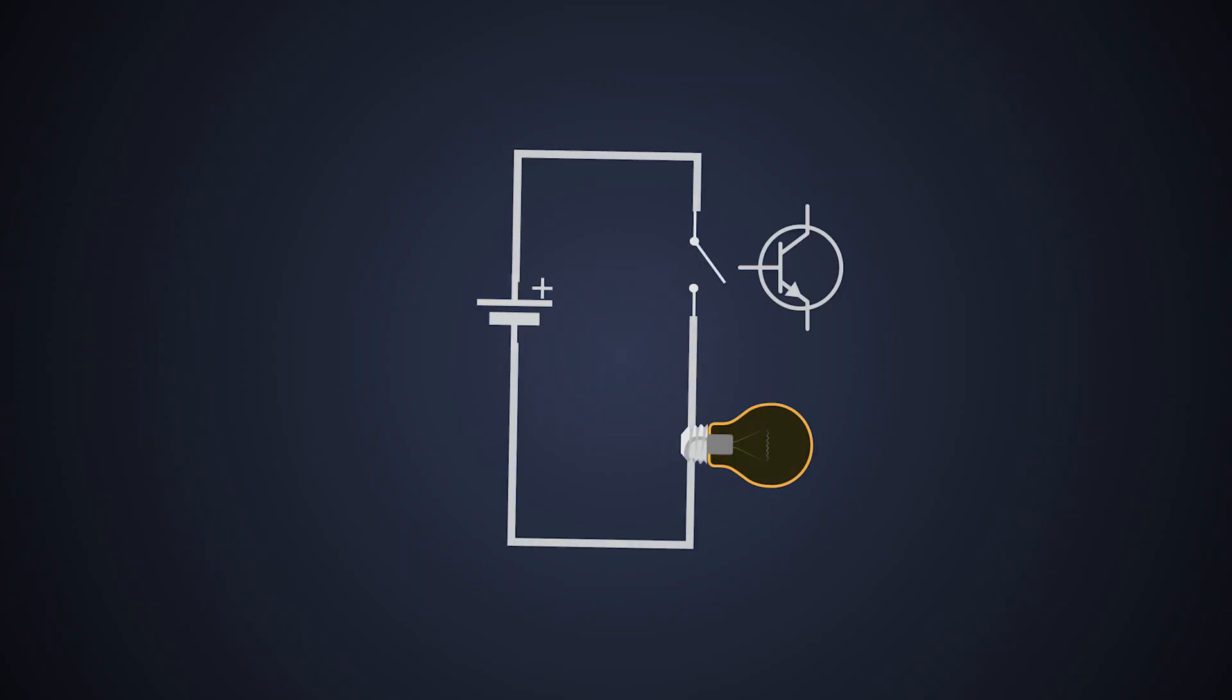We can use an NPN transistor as a high side switch as well, but using it is not an easy job because to turn on the NPN BJT we need to provide at least 0.7 volts to the base of the NPN transistor. We'll apply that to an NPN high side switch and let's see whether it works or not.